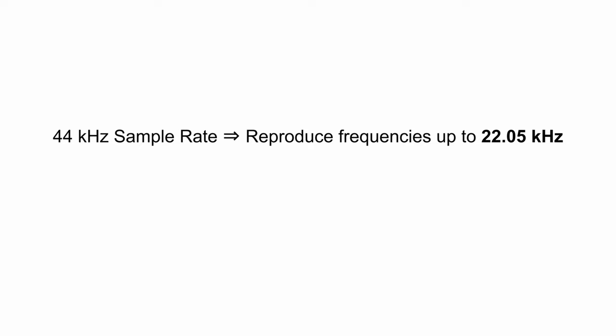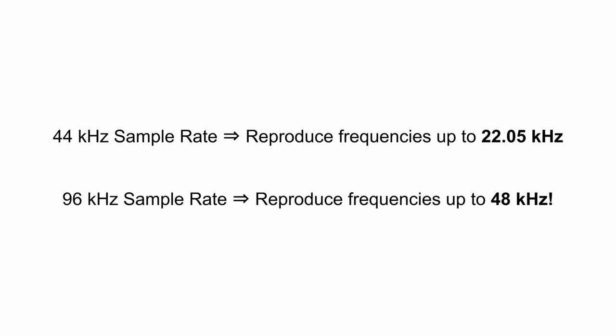So current audio standards allow us to accurately reproduce 22.05 kilohertz based on a 44.1 kilohertz sample rate. If we go up to a 96k sample rate, now we can accurately reproduce frequencies up to 48 kilohertz. That's almost two or three times what humans can hear. If you're doing audio for dogs or cats or bats or some other creature that hears way higher than humans, then maybe it makes sense to record at 96 kilohertz. But at 44.1 kilohertz, we already can perfectly recreate all the frequencies that we can hear. So is there some other reason why we might consider recording at higher sample rates?